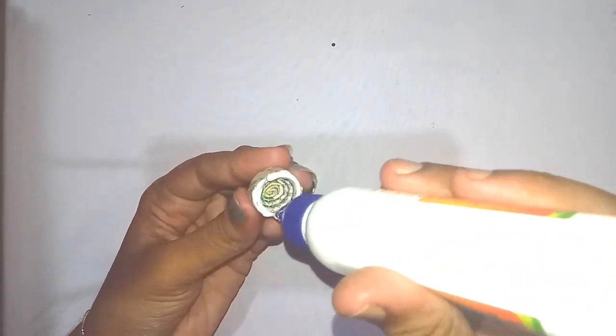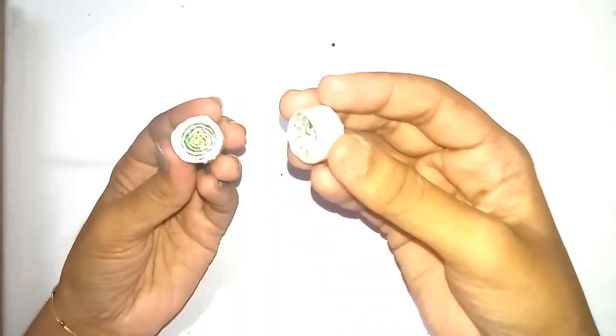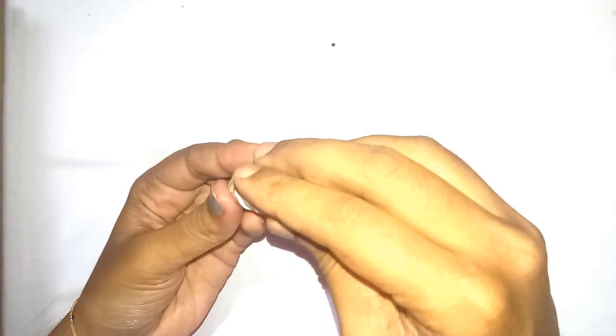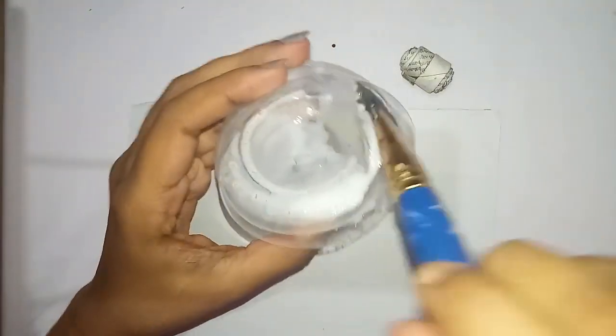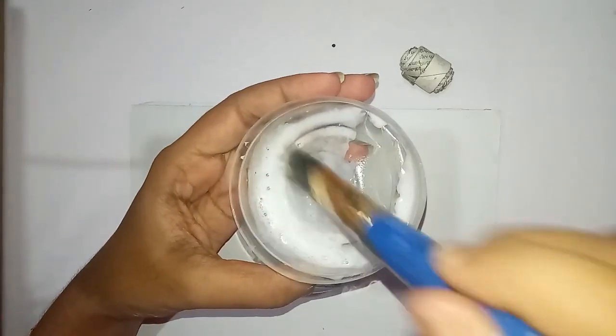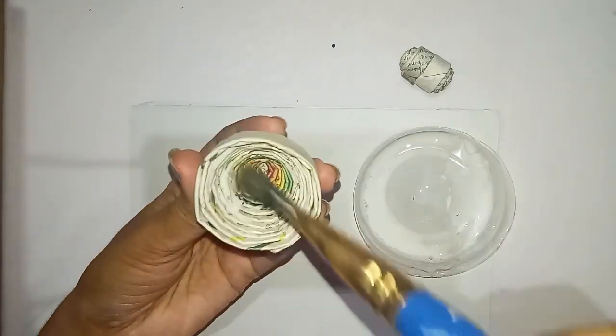Apply glue on the edges of one paper reel and stick the second one on top. Take equal quantity of Fevicol and water, mix it together, and apply on both sides of the papers.